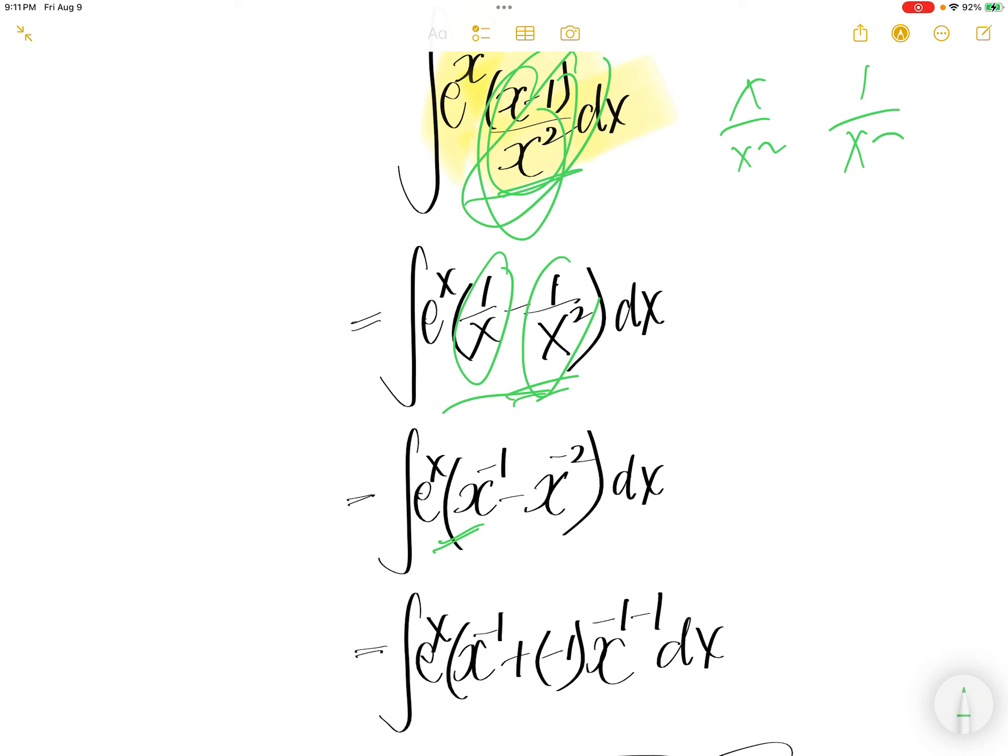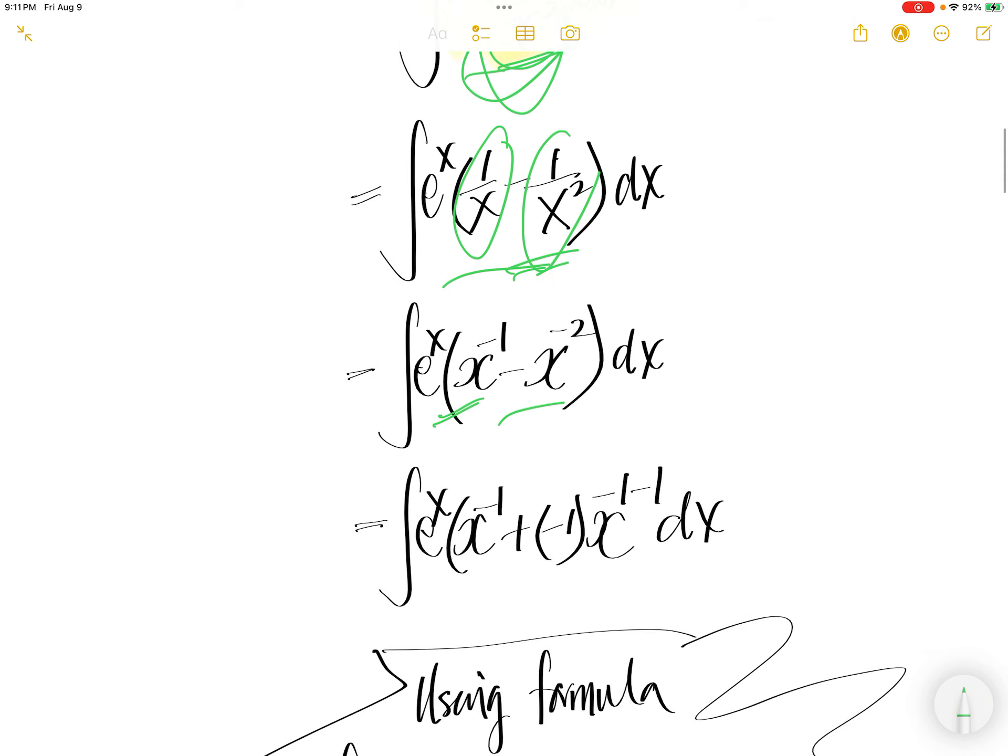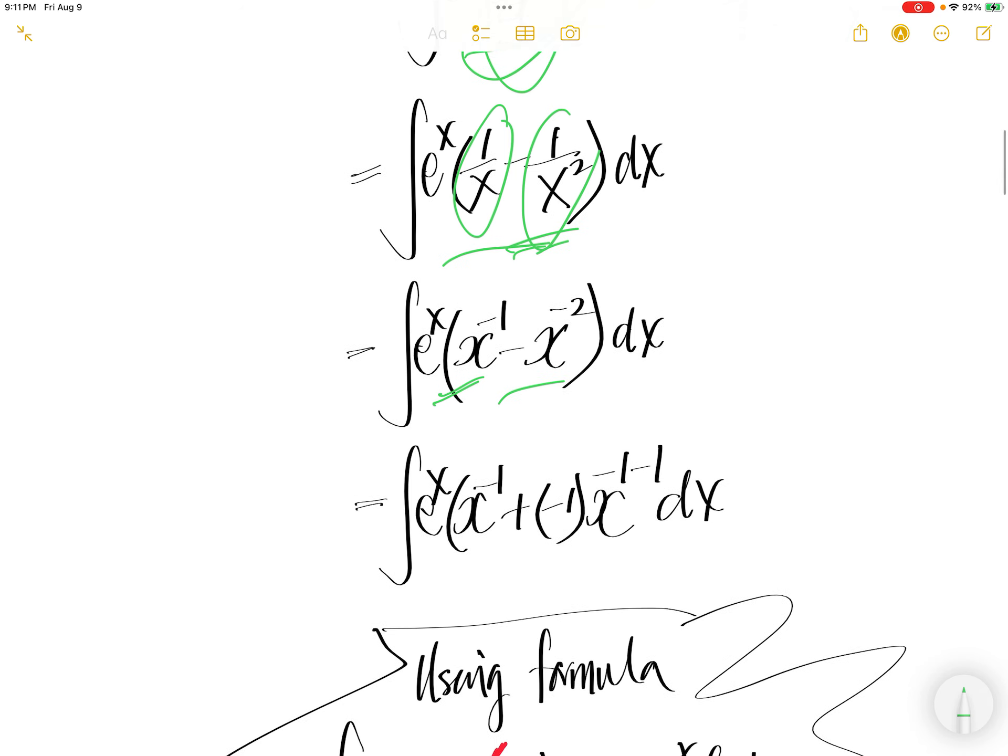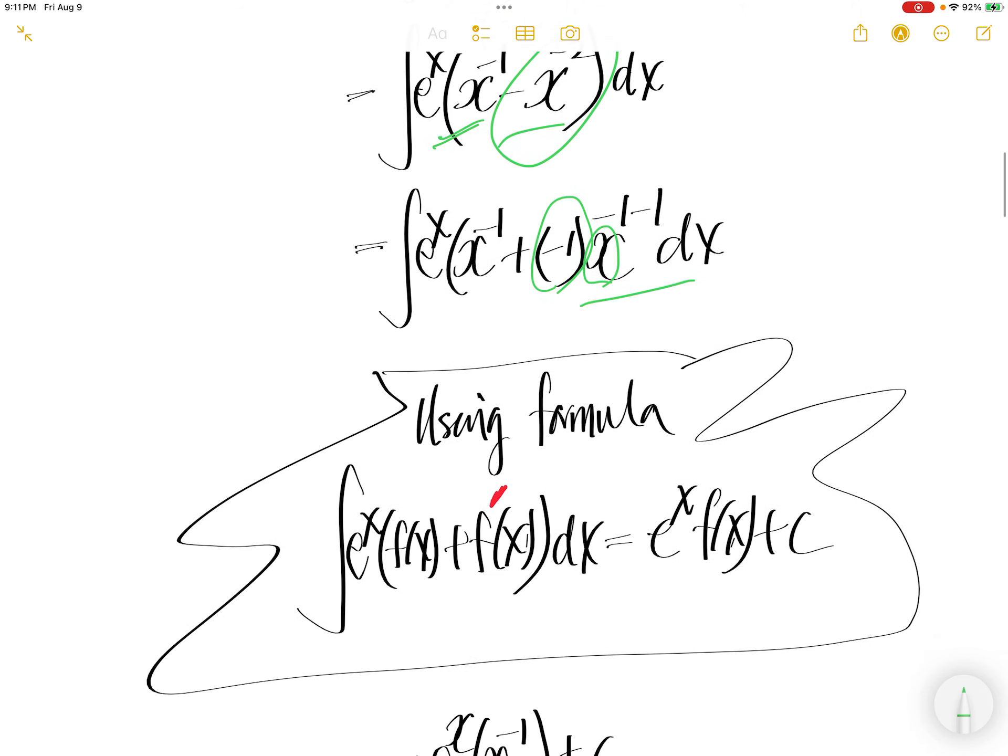Now write 1 over x as x to power negative 1, and write 1 over x squared as x to power negative 2. Now we can write this piece as x to power negative 1 plus negative x to power negative 2 dx.